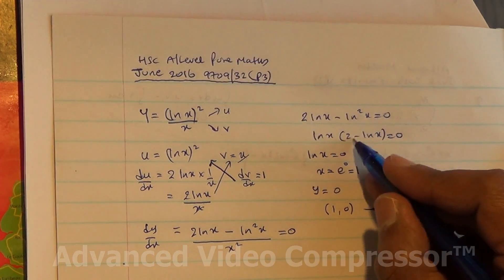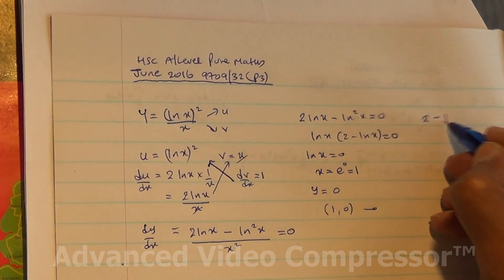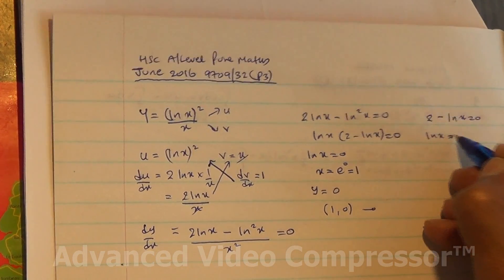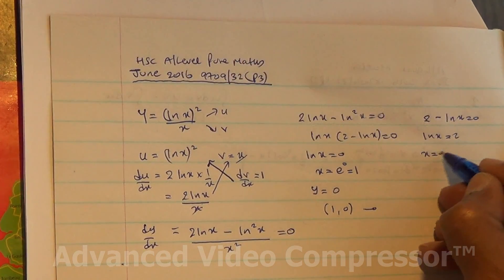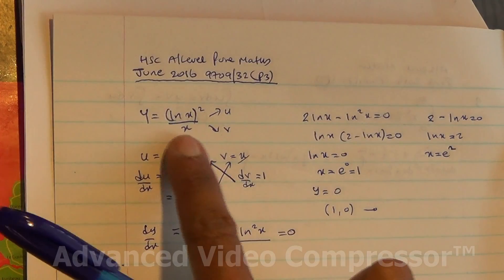The second solution: 2 minus ln x equals zero, so ln x equals 2. Therefore x equals e². Now replace this in the equation.